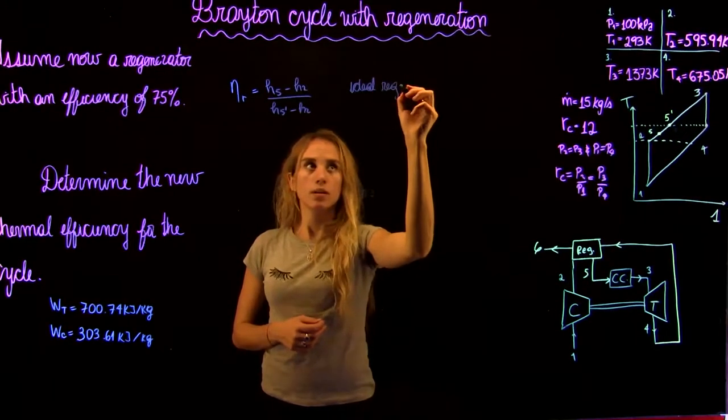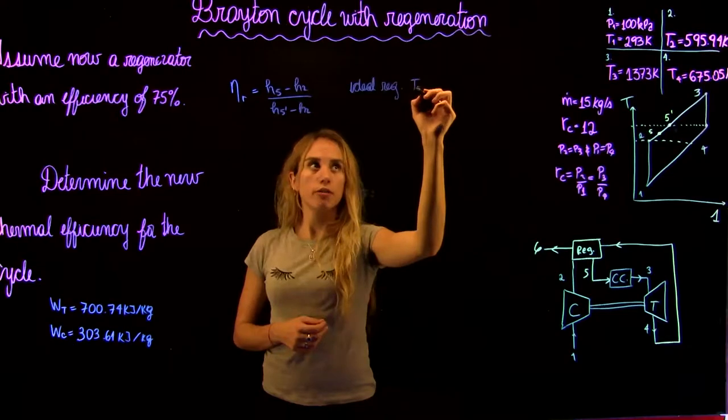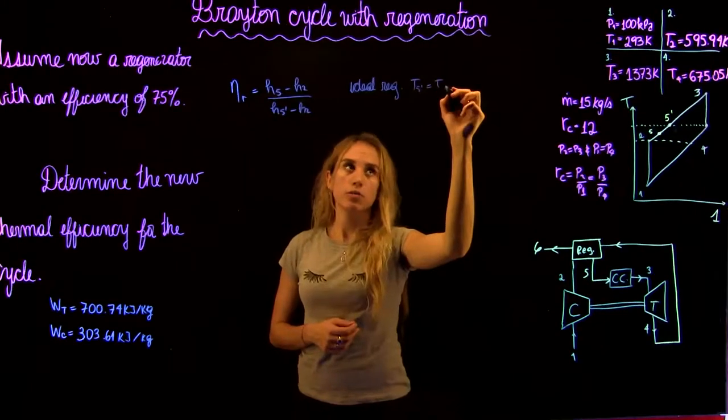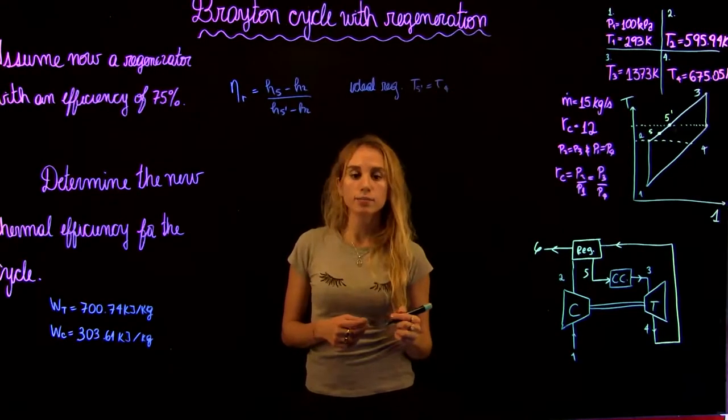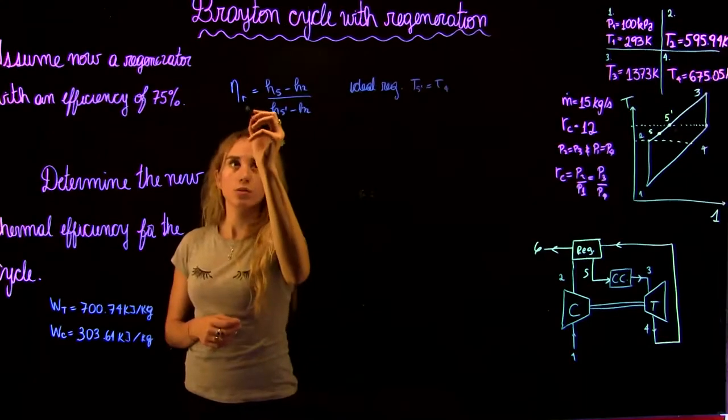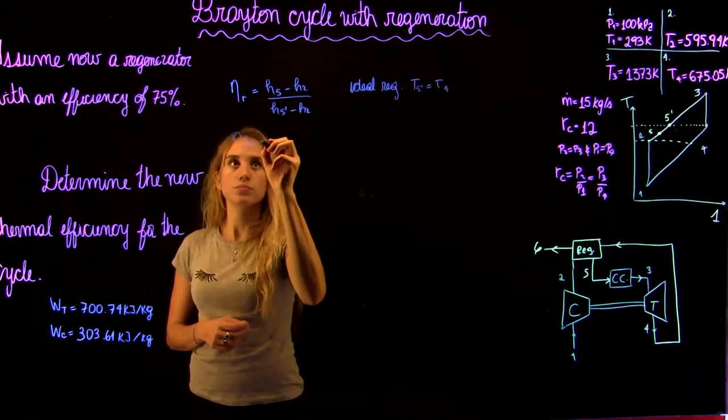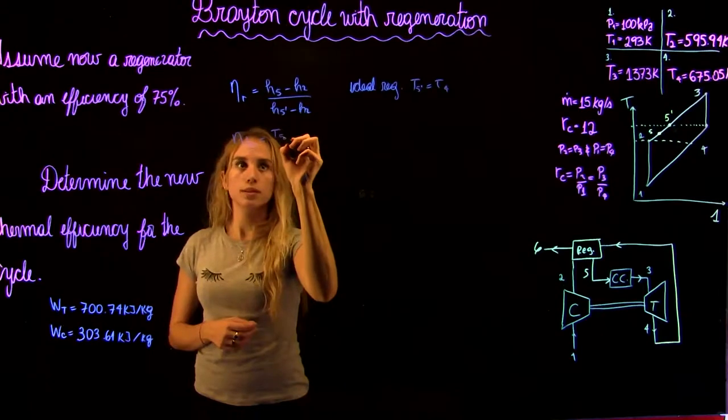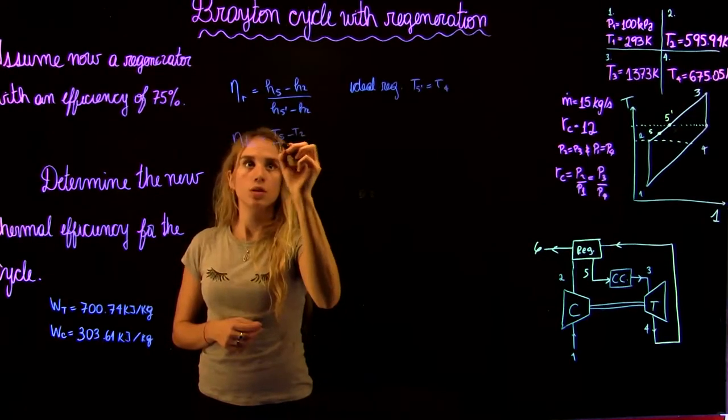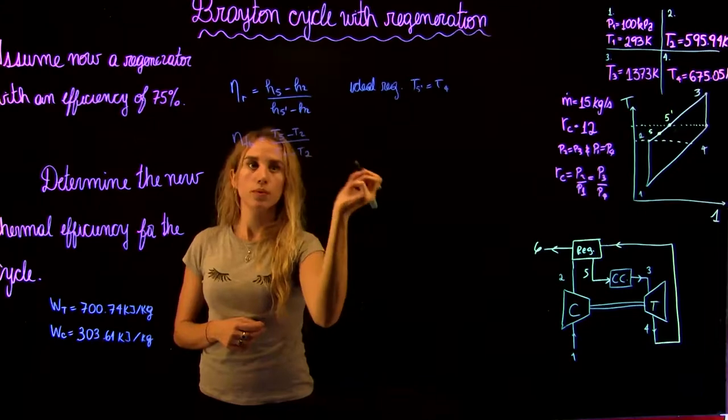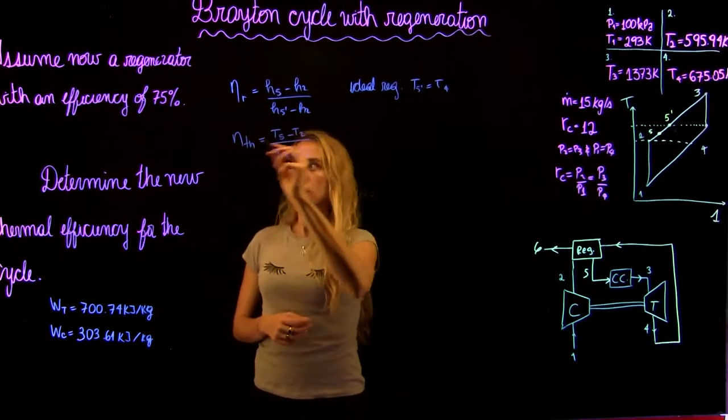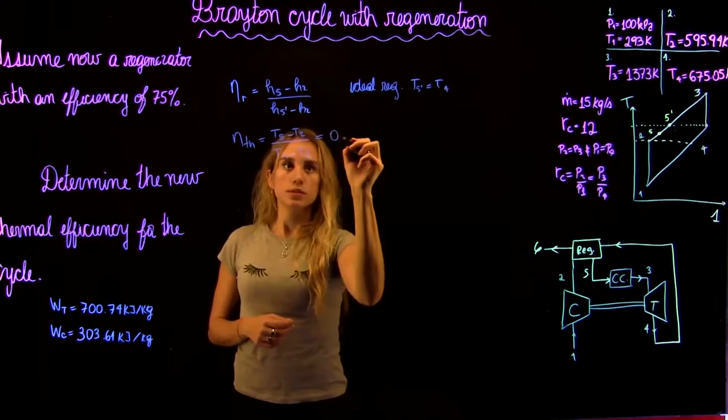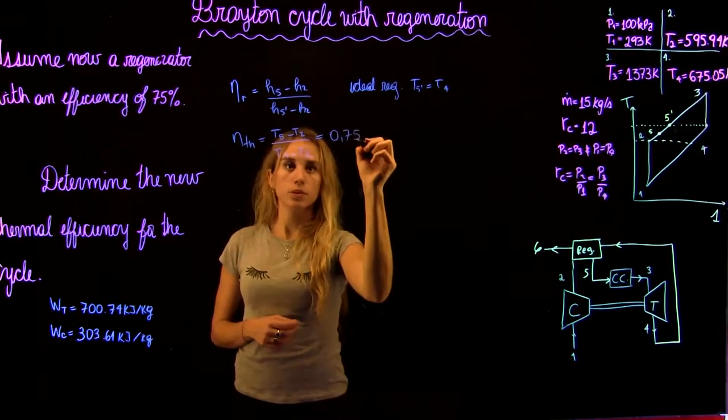temperature at 5 prime is equal to temperature at 4. If we use the standard assumption, we can write this in terms of temperature. So it's equal to t5 minus t2 over t4 minus t2, and we know it's equal to 75%.